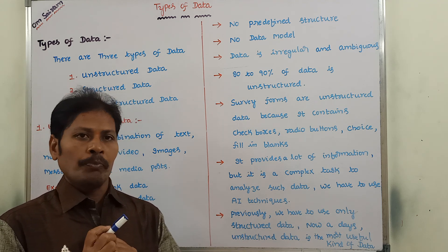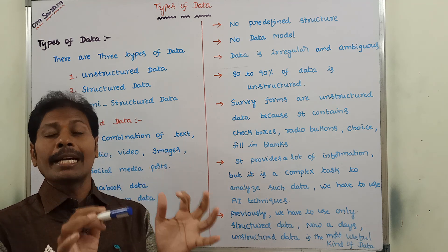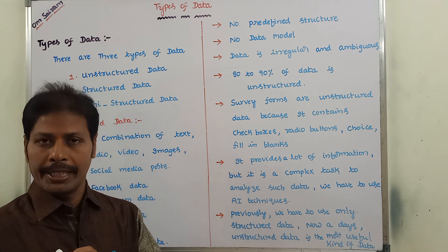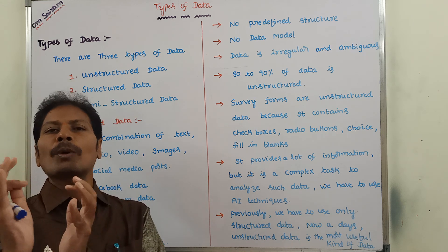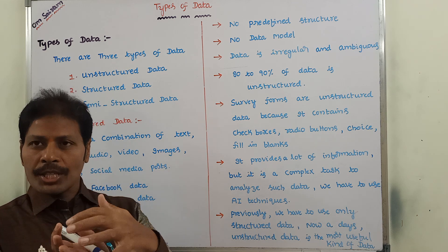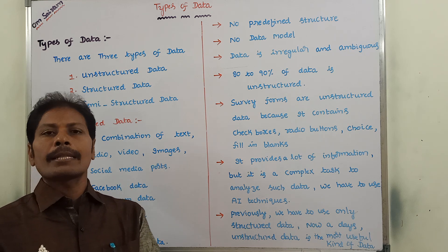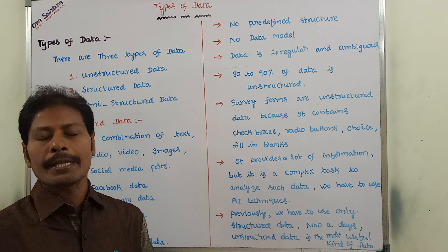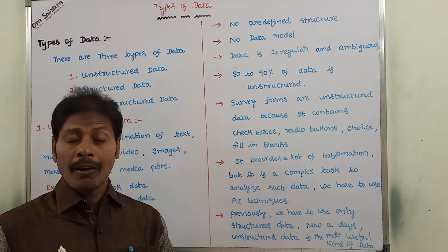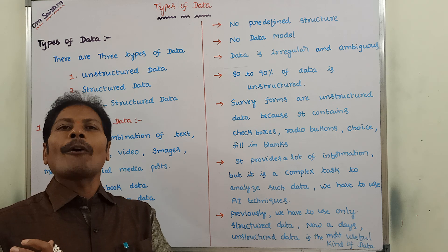Throughout the world, how much data is generated? Among that data, 80 to 90 percentage of data is unstructured data. Only 10 to 20 percentage of data is structured data. Structured data can be represented in the form of tables. A table is nothing but a collection of rows and columns.